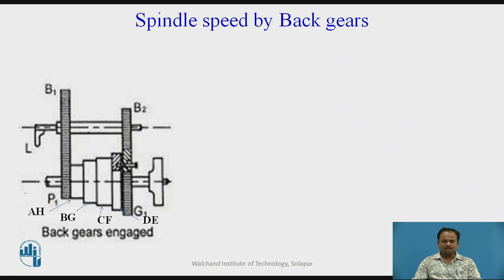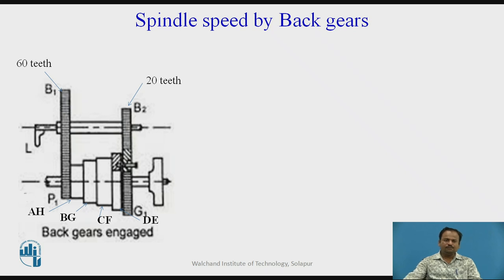Next: spindle speeds by back gears. We know the pinion has 20 teeth and the bull gear has 60 teeth each. When the back gear is engaged, the key is unlocked and whatever speed is coming to the speed cone pulley is transferred to the pinion, and from the pinion to the bull gear, and then again through the pinion to the bull gear on the spindle.